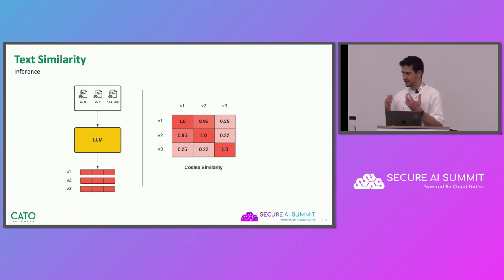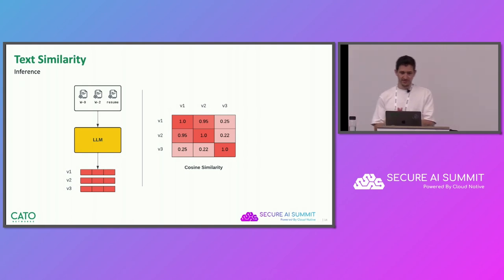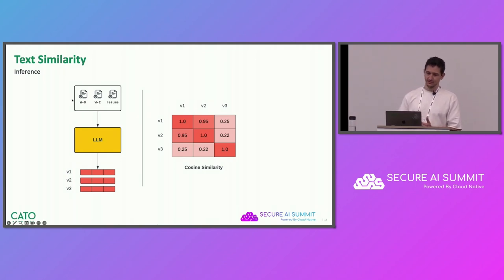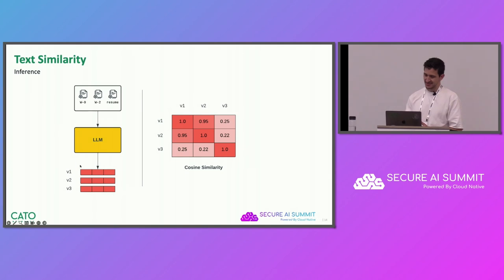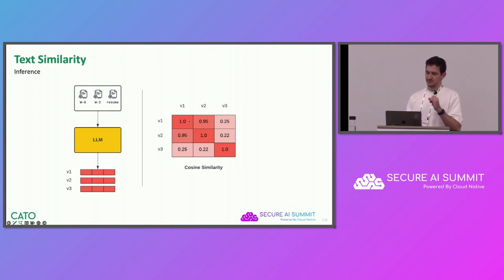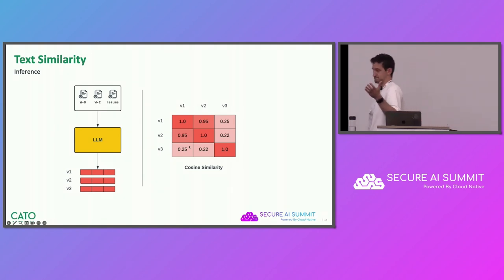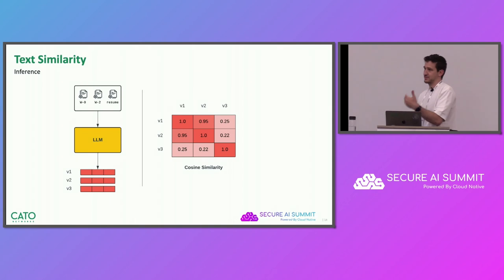Once we have a trained network, we expect it to create meaningful representations. We have three documents: a W9 IRS tax form, a W2 IRS tax form, and a resume, and we get three corresponding vectors. The model is successful in creating meaningful representations because the distance between V1 and V2 is very similar — we can measure that using a similarity metric like cosine similarity — but V3 gets a low similarity. This is what we expect after the fine-tuning stage.